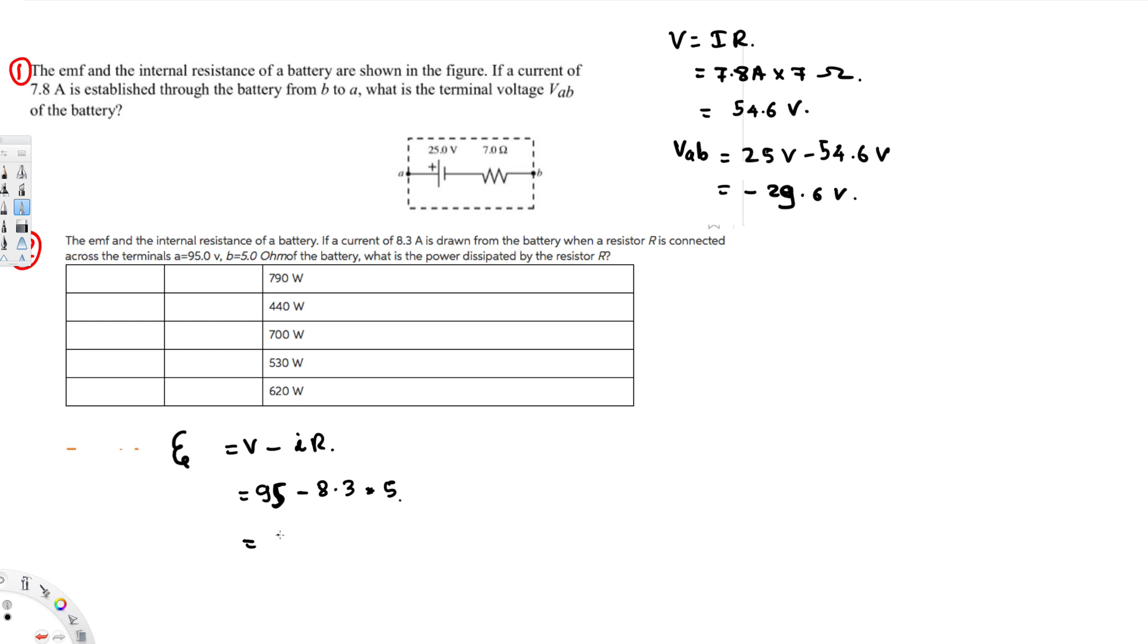Now we have calculated the EMF. The question is asking for the power. We know that power is equal to V times I. V is going to be this EMF voltage. So here we plug this value, that's going to be 53.5 volt times this I current, that's 8.3 ampere.